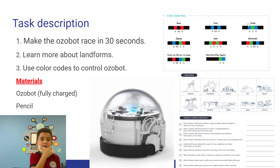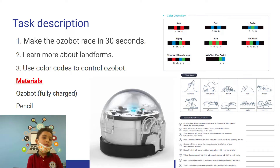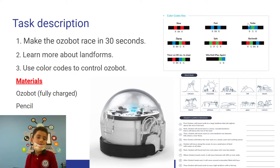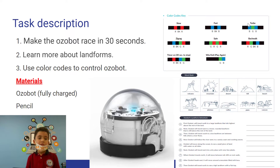Task description: Make the Ozobot race in 30 seconds or less. Learn more about landforms. Use color codes to control the Ozobot. Materials: Ozobot fully charged, pencil, scissors, Bloom, Ozobot pencil, and base sheets.